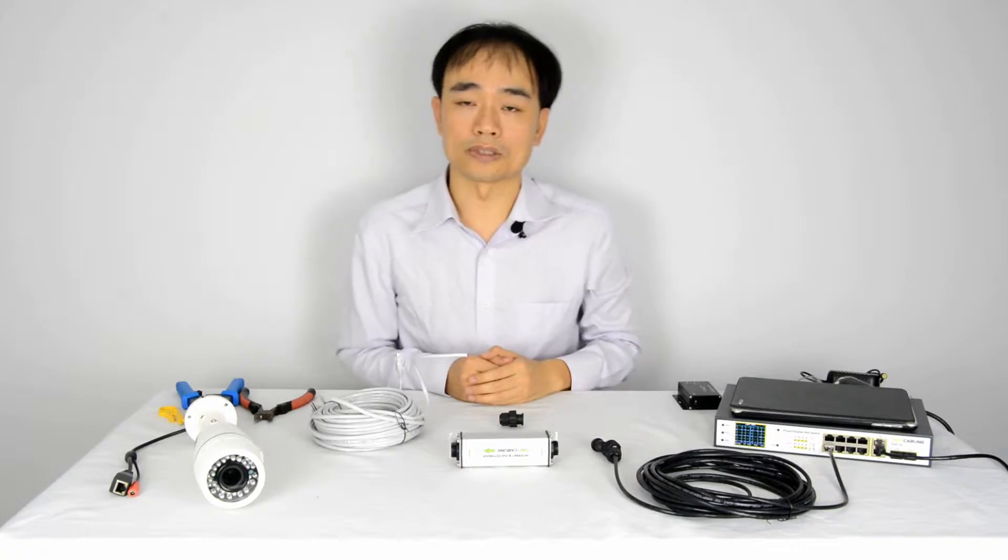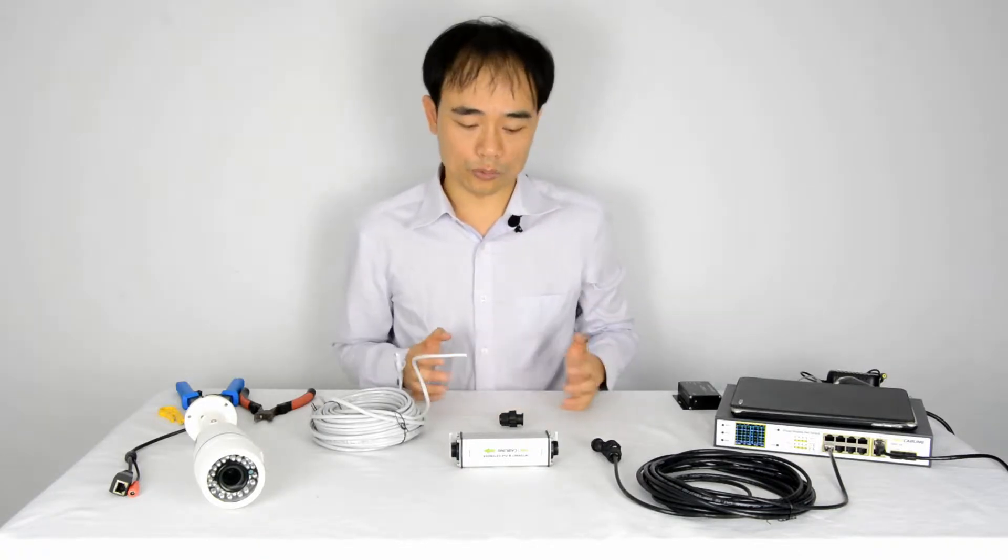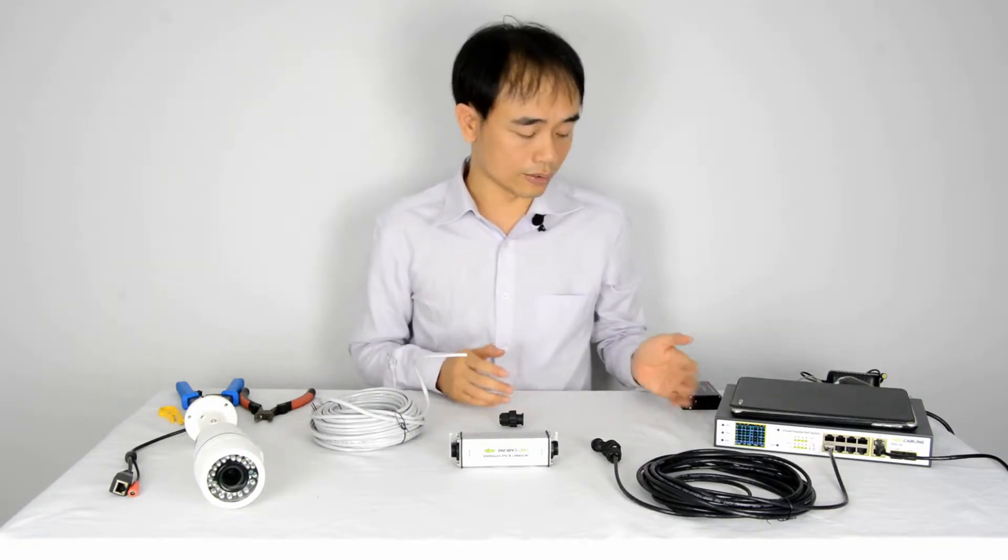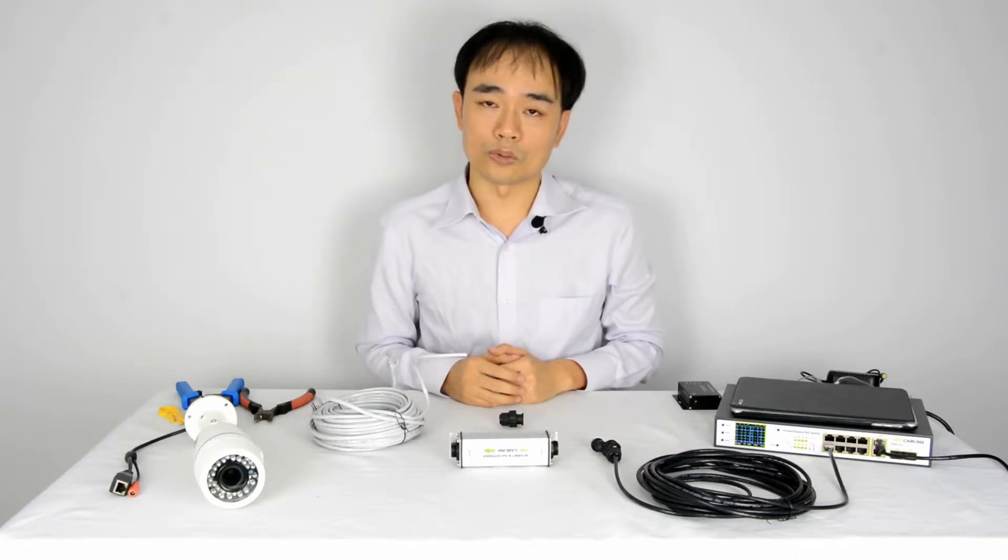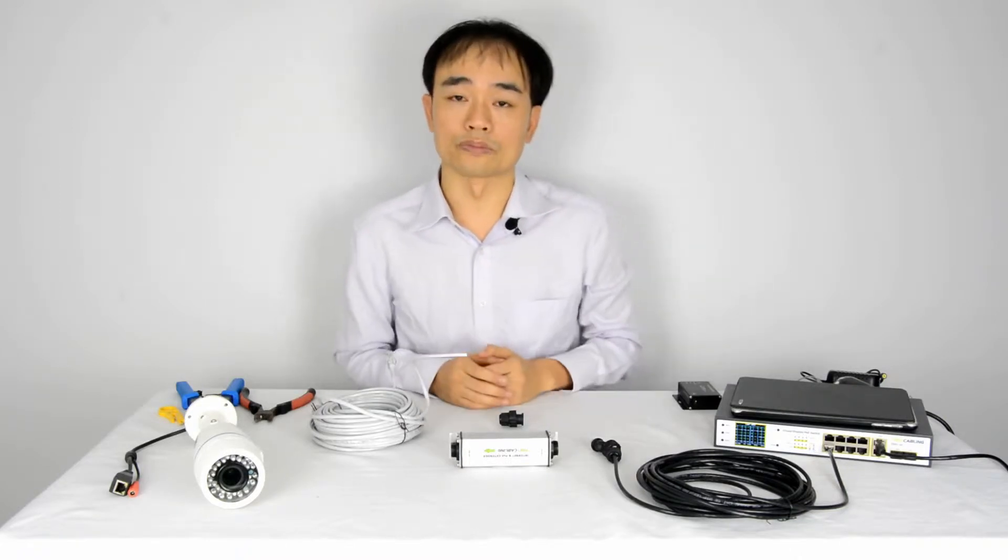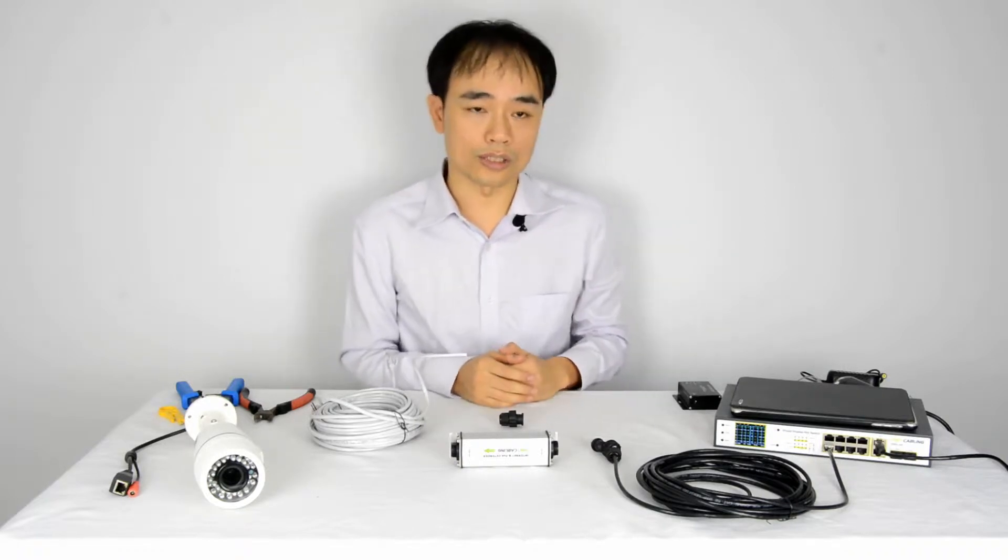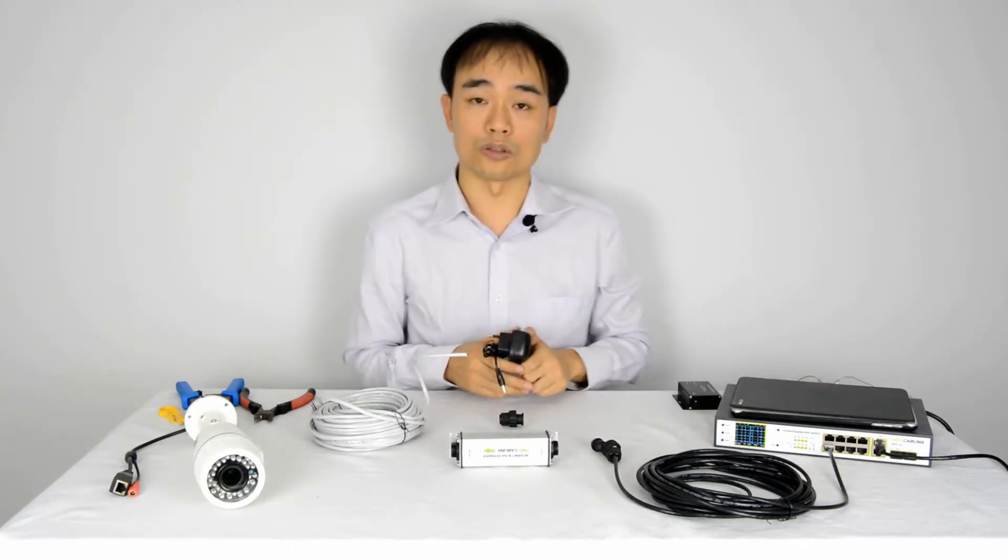As we know, the internet cable is limited to 100 meters. So if you need more than 100 meters between the IP device and the switch, we will have to add a network repeater between these two cables. So the repeater also requires power, which means we also have to get a power source close to the repeater.